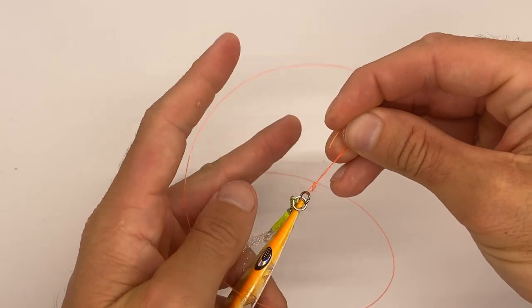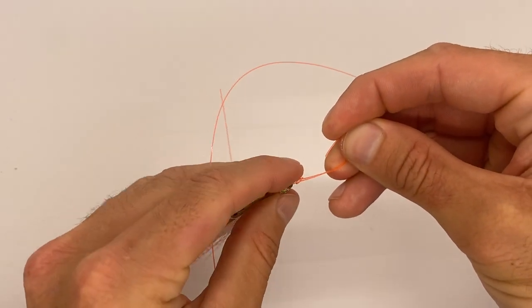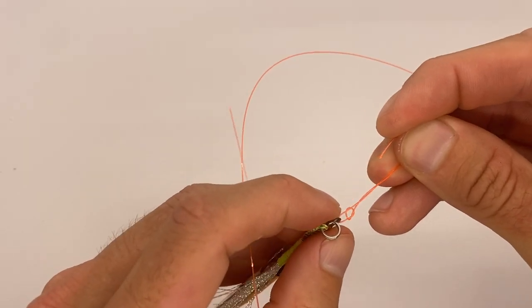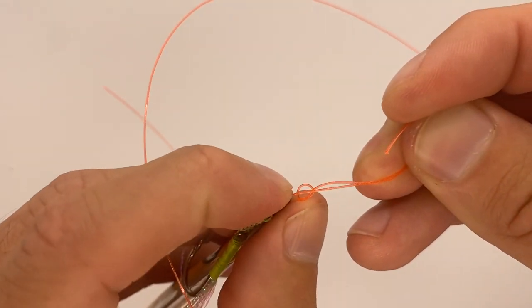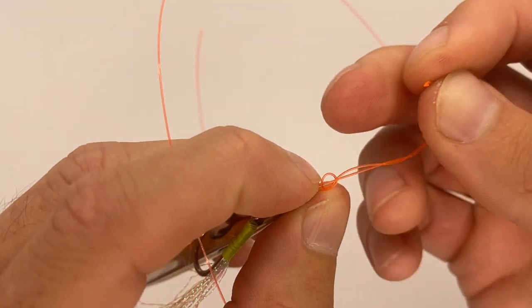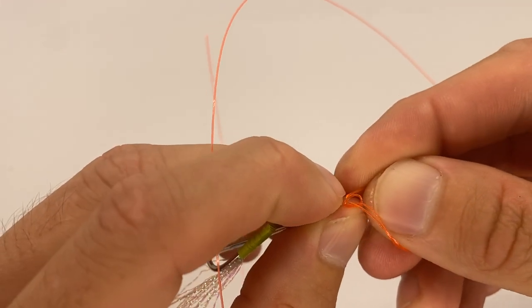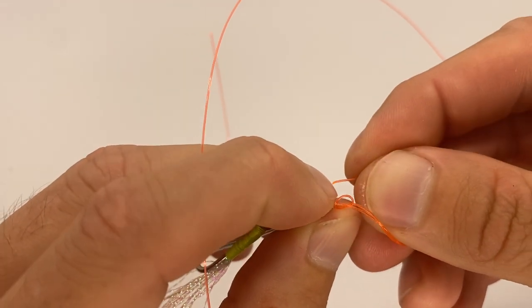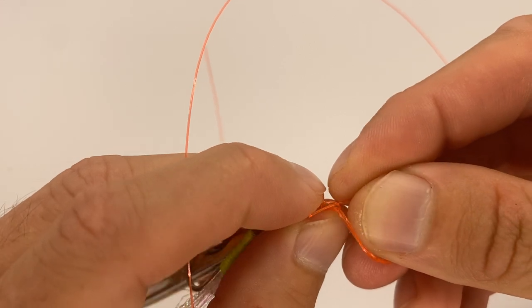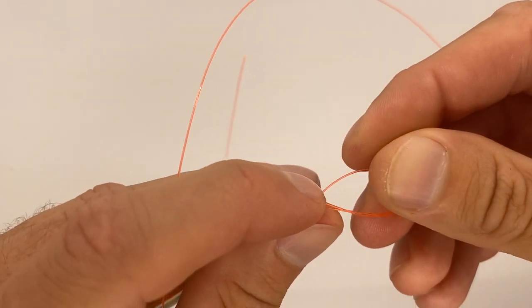And then, this is really important. You want to take your loop, and you want to push it in, just like that, and put the end of your line right through the hole that you made by pushing it in, just like that.